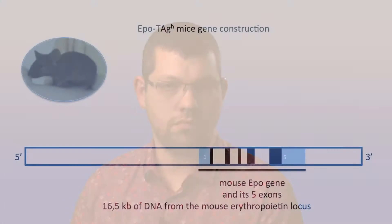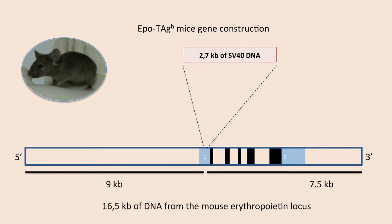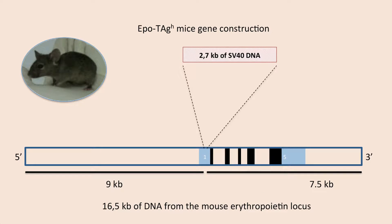In this review, we focused on the description of mouse models presenting chronic EPO deficiency. This line was obtained using a transgenic construct containing a SV40 sequence in the 5' untranslated region of the mouse EPO gene, flanked on each side by 9 and 7.5 kilobases of DNA from the mouse EPO locus.